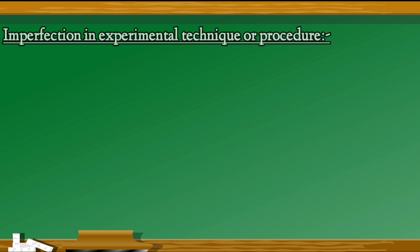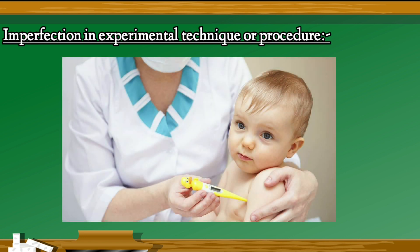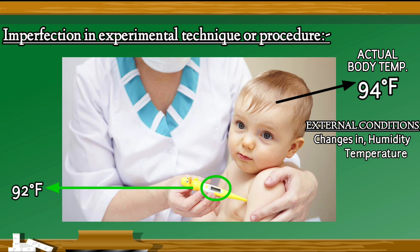Imperfection in experimental technique or procedure. To determine the temperature of a human body, a thermometer placed under the armpit will always give a temperature lower than the actual value of the body temperature. Other external conditions such as changes in humidity, temperature, wind velocity, etc., during the experiment may systematically affect the measurement.